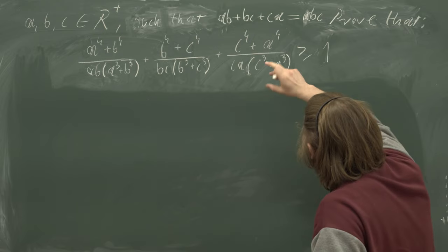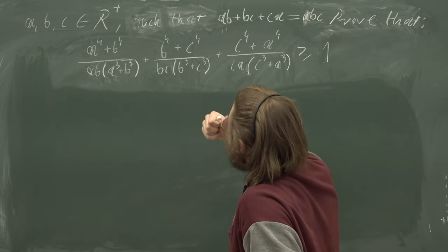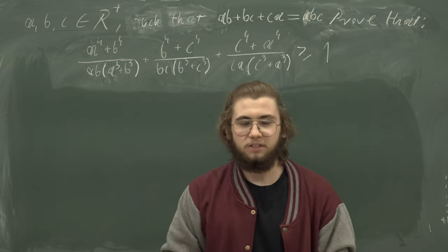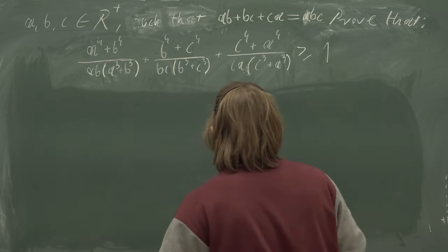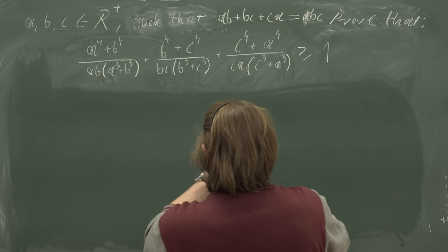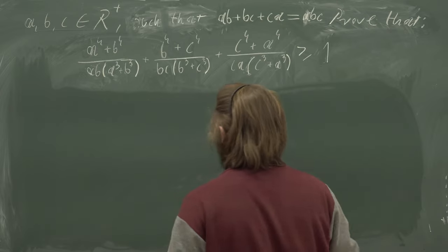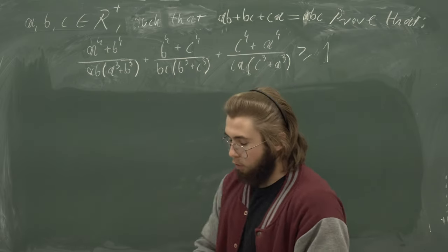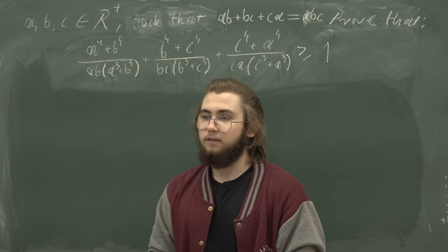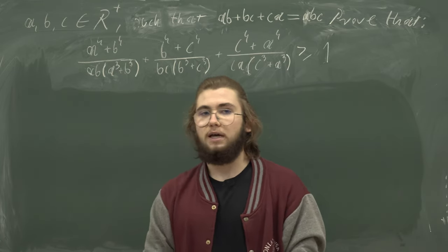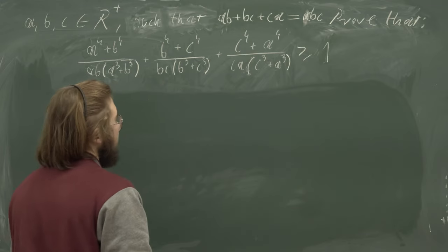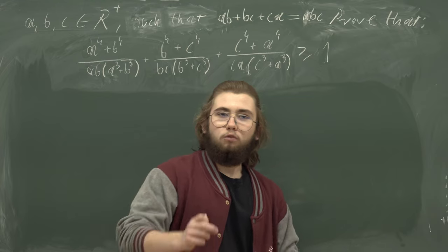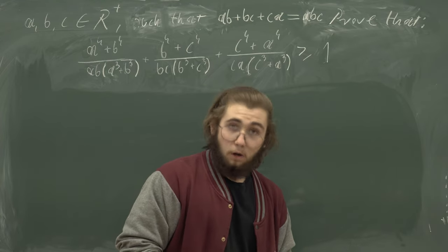Now, this beautiful problem is from Poland, my homeland. We are given a times b times c, where a, b, and c are positive real numbers such that ab + bc + ca equals abc. We're supposed to prove that (a⁴ + b⁴)/(ab·(a³ + b³)) plus similar cyclic terms is greater than or equal to 1.